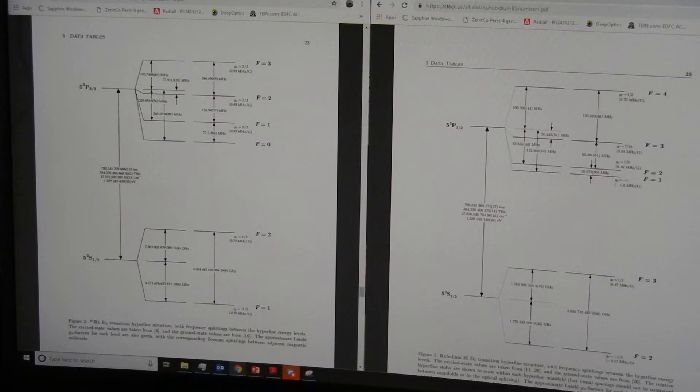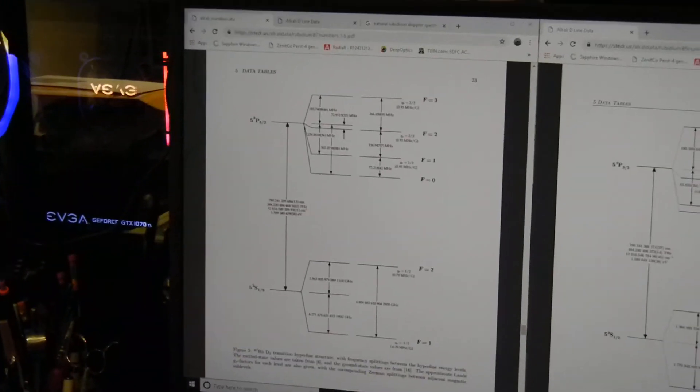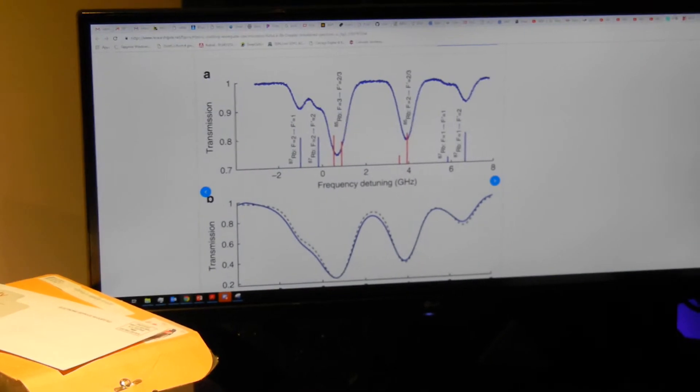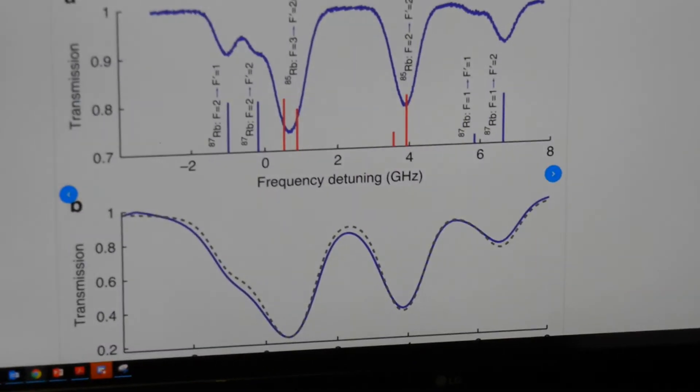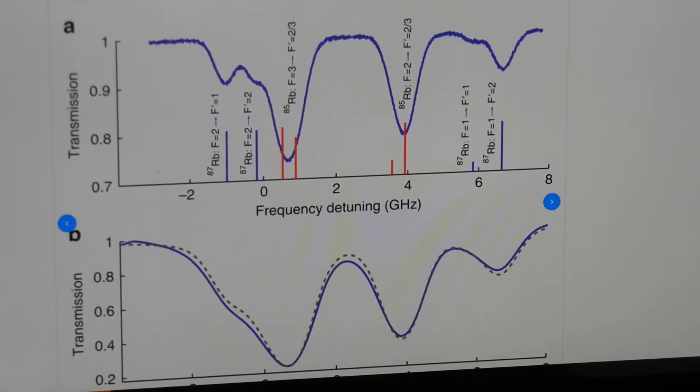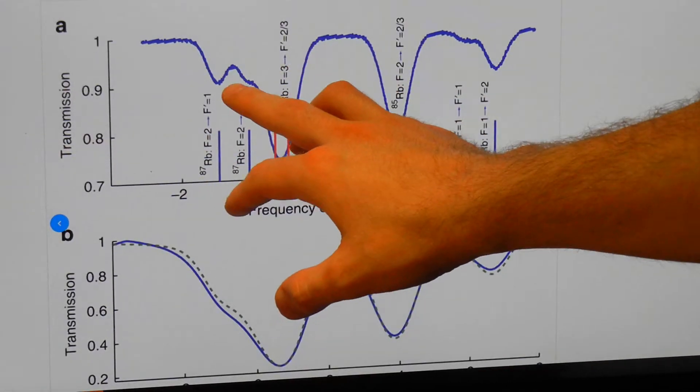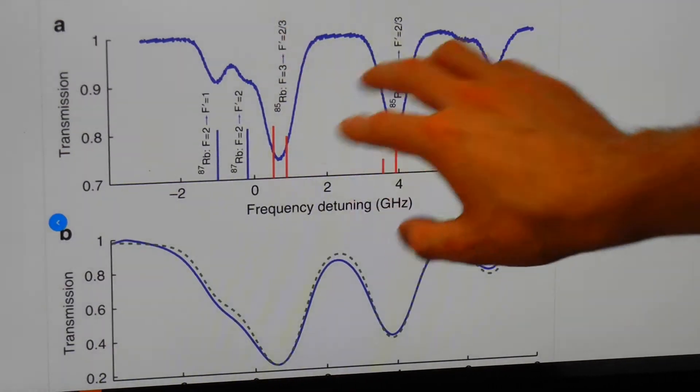So, we'll just have the ability to view them. So, another quick example here, before we get into it, is that this is mostly what we'll be seeing, are the Doppler-broadened peaks of Rubidium-87, which are here, and Rubidium-85.